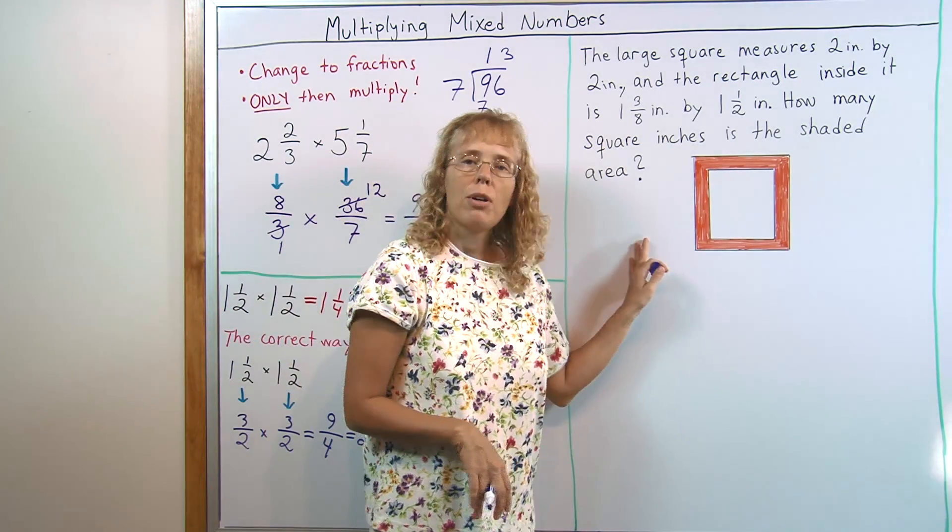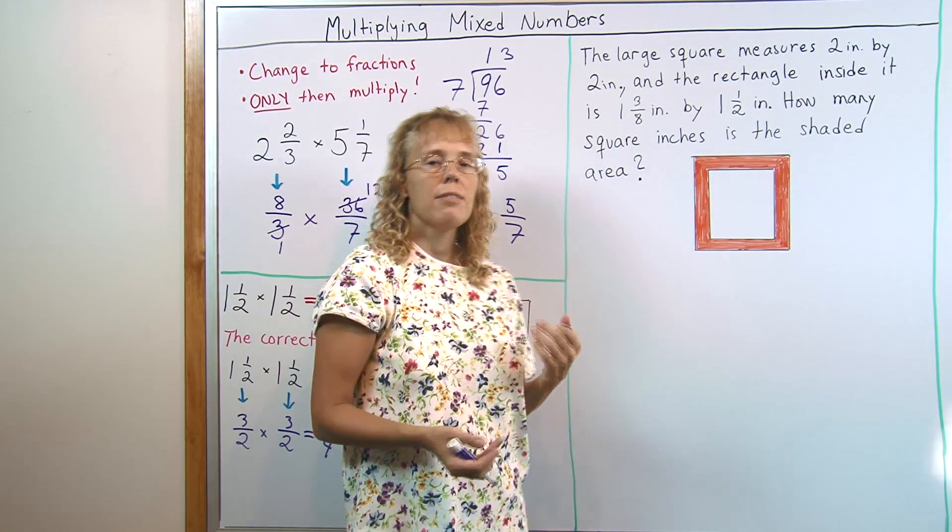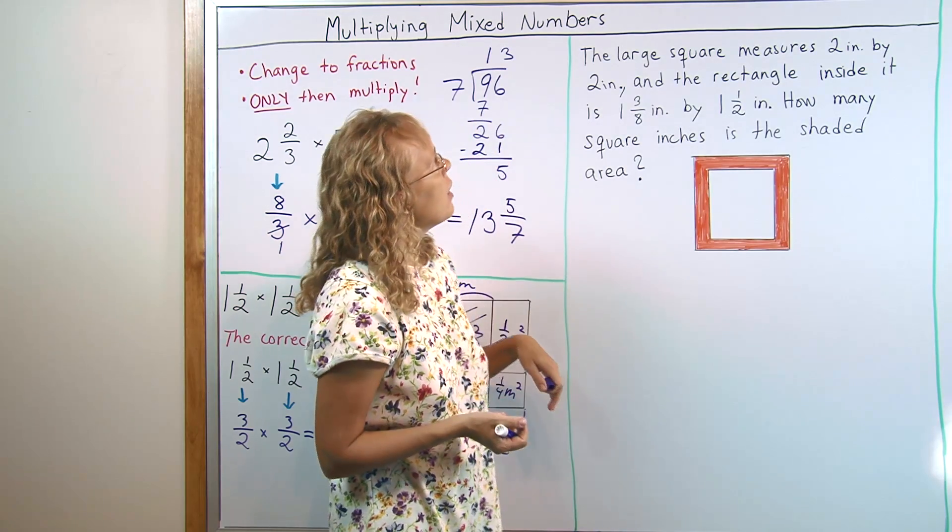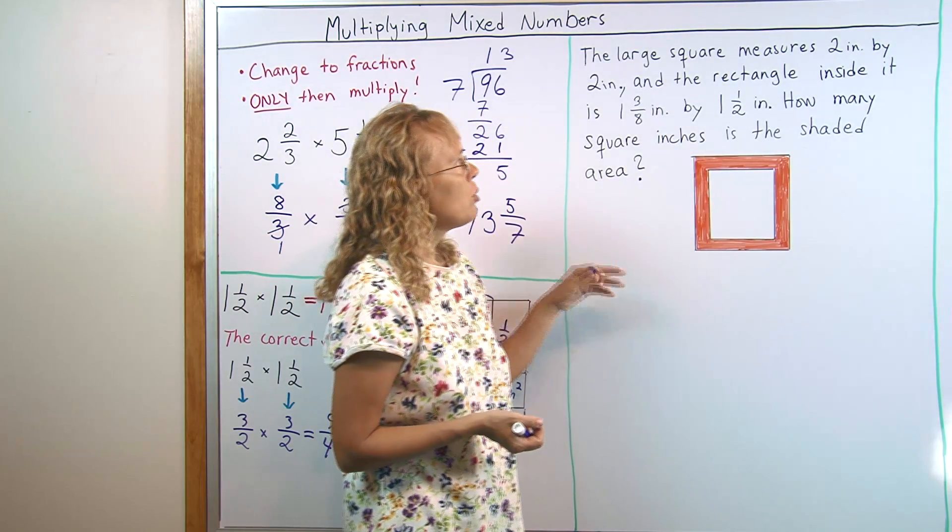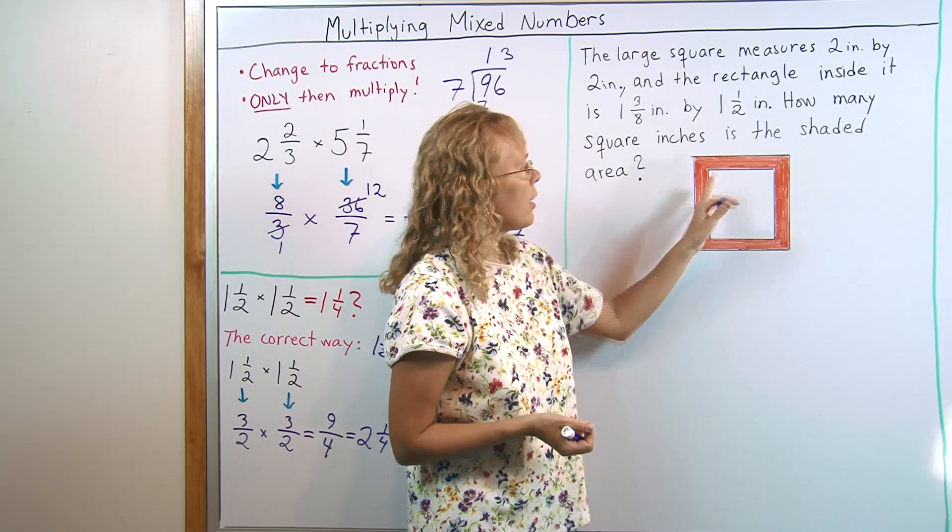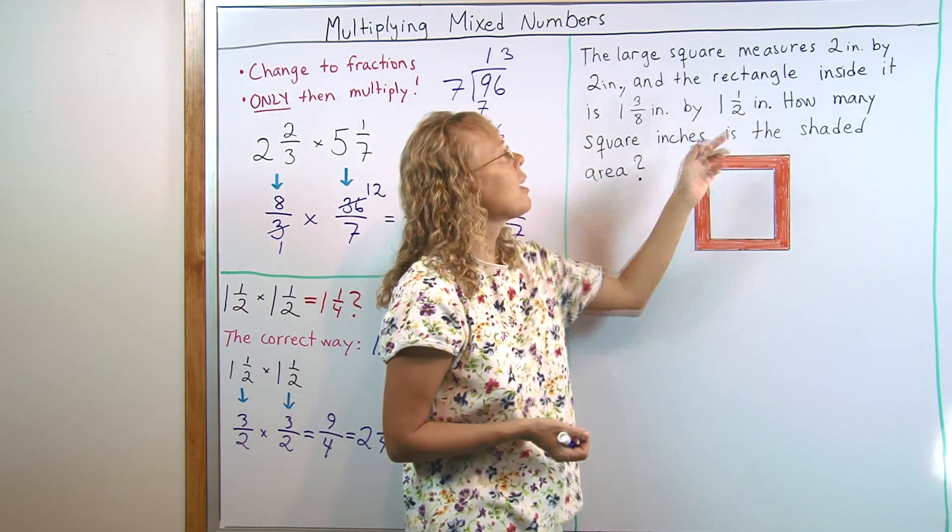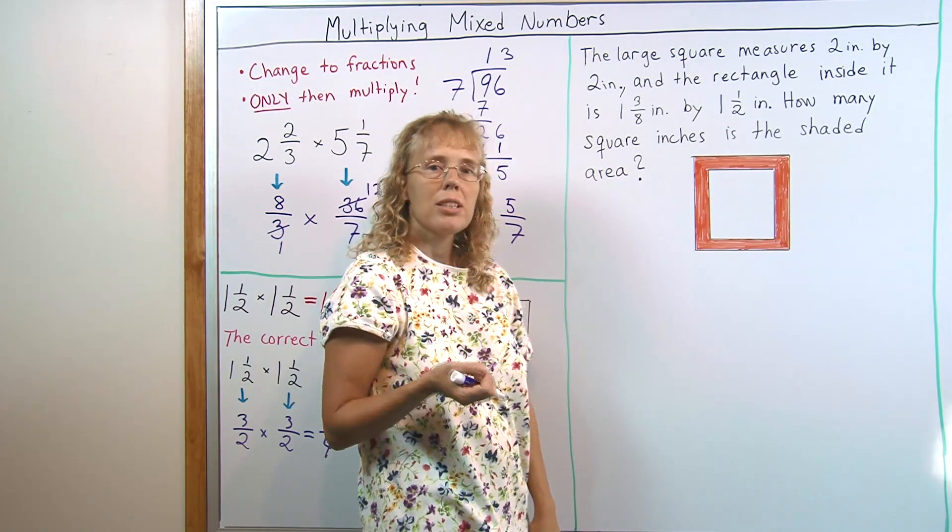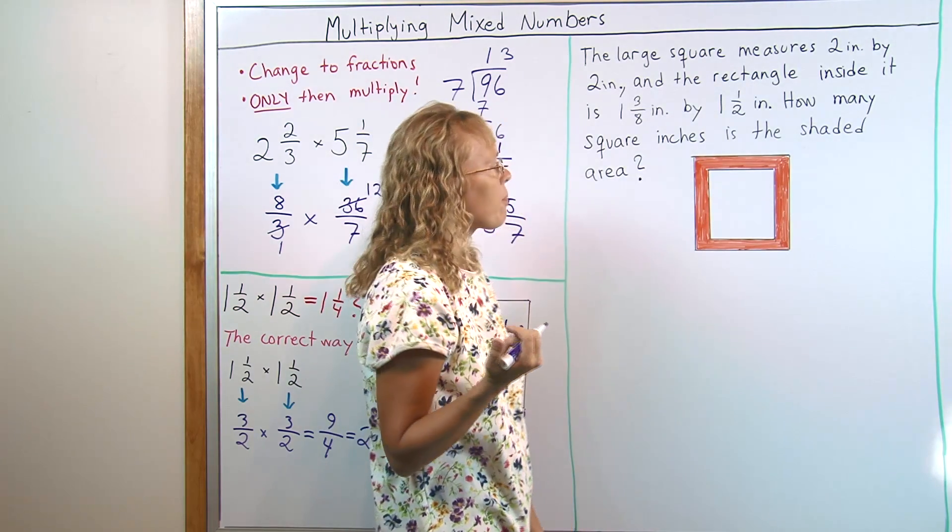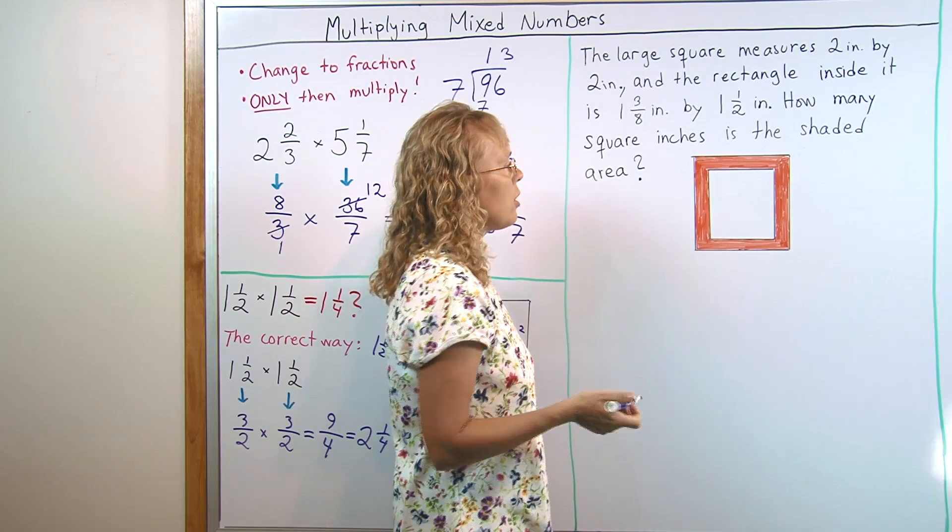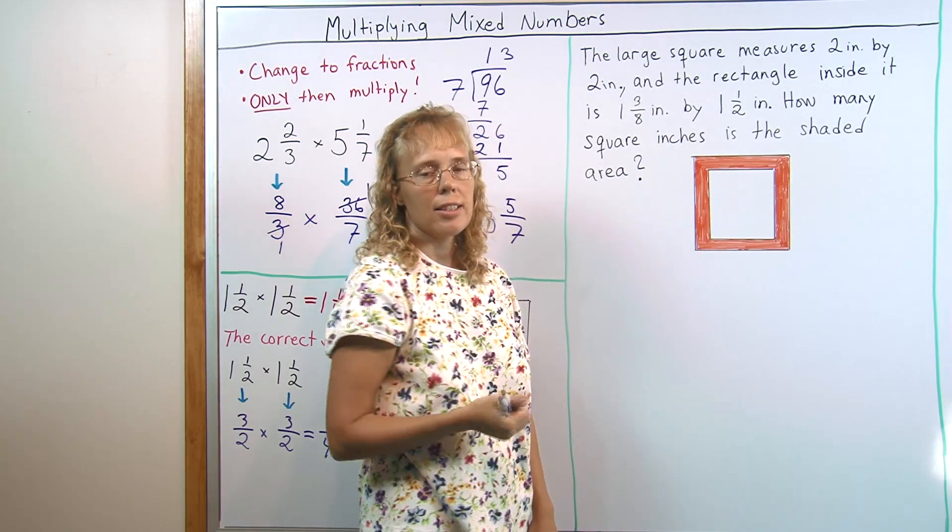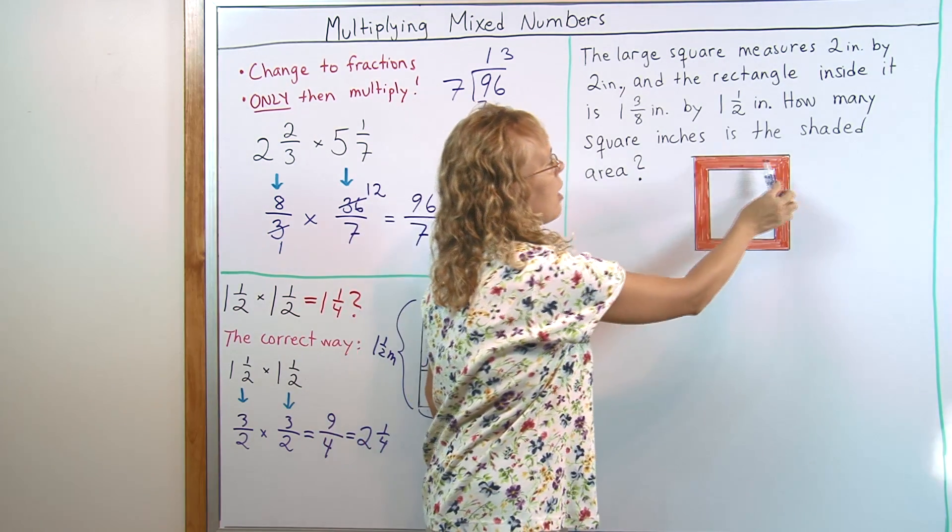Here I have a word problem. And let's solve that. It involves multiplying mixed numbers. This large square here measures 2 inches by 2 inches. Then inside it there's a rectangle that measures 1 and 3 eighths inches by 1 and 1 half inches. How many square inches is the shaded area? Now, it's not asking for the area of the rectangle inside it. It's asking for this colored area here.